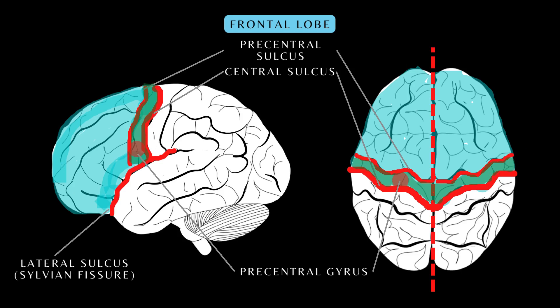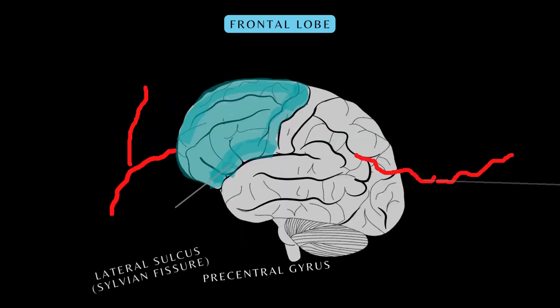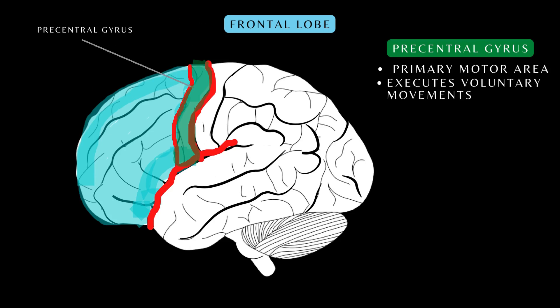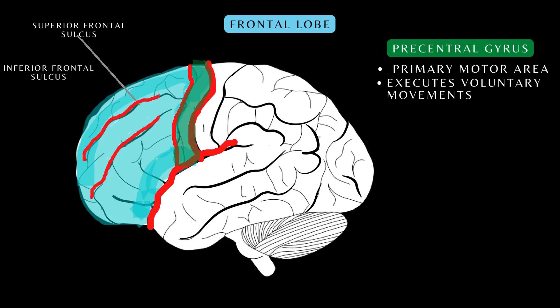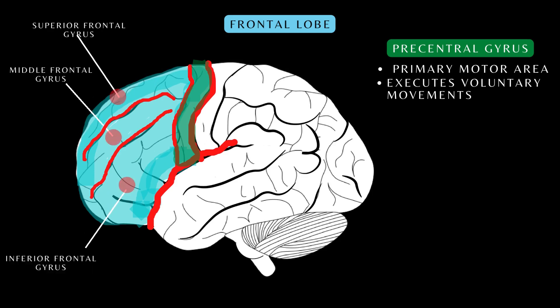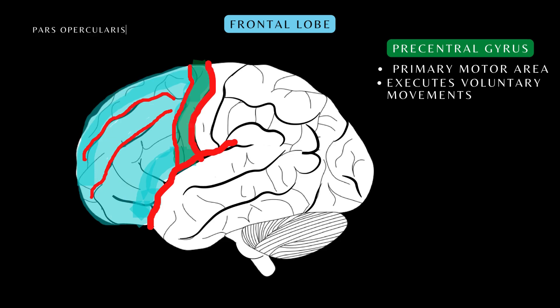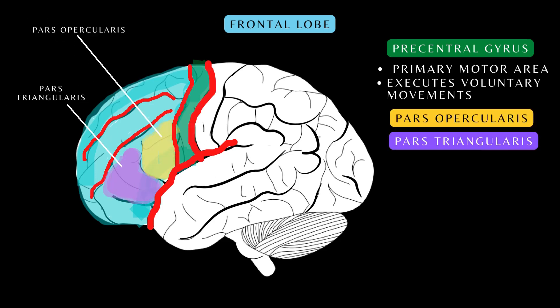Taking a deeper look at the composition of the frontal lobe: the precentral gyrus is the primary motor cortex, responsible for the execution of voluntary movements. The superior and inferior frontal sulci divide the frontal lobe into the superior, middle, and inferior frontal gyrus. The inferior frontal gyrus is further divided into the pars operculum, the pars triangularis, and the pars orbitalis.